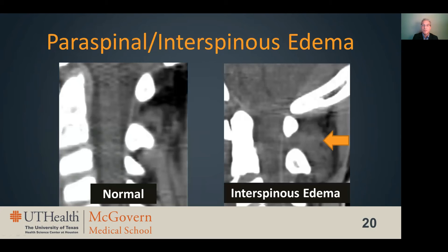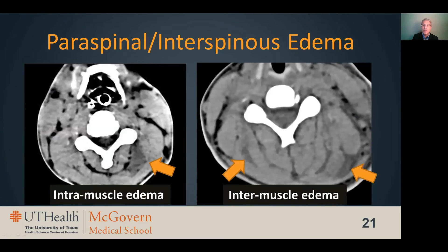The last commonly seen soft tissue finding on CT is paraspinous or interspinous edema, which can be hard to recognize on CT unless it is florid. I identify interspinous edema by seeing confluent replacement of interspinous fat by soft tissue density. On the left, a normal patient shows fat visible between the spinous processes at each level. On the right, complete obliteration of the interspinous fat by soft tissue at C1-2 represents interspinous edema and hemorrhage. Paraspinous edema can present as either focal decreased attenuation and expansion of the muscle or as edema obscuring the intermuscular fat planes.